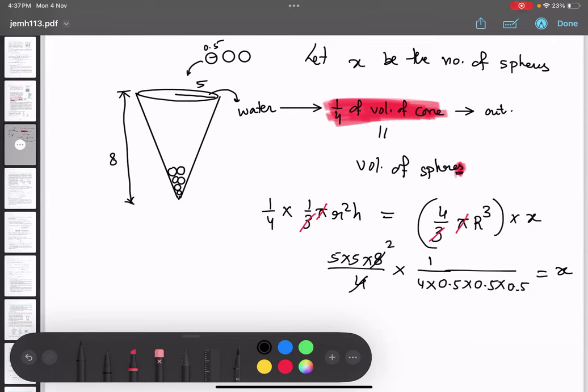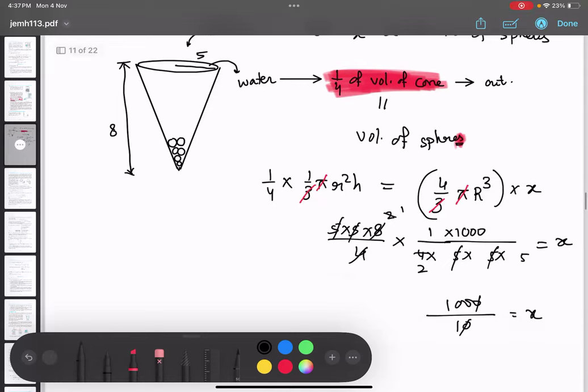Now, 4 getting canceled. I can convert them as 5 by 10 and place zeros at the top. Is it clear? 1,000. 5, 5 getting canceled. This is 1. This is 2. Now what is remaining in the numerator? 1,000. 5 into 2 is 10. Cancel. 100. So I need 100 spheres.